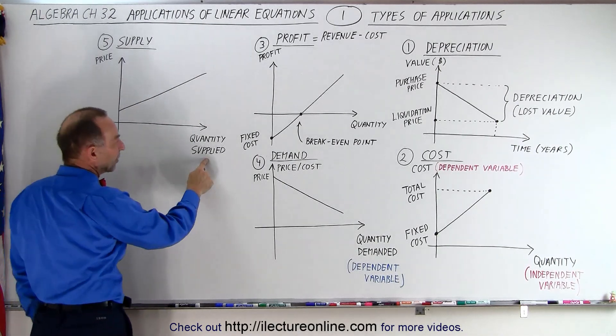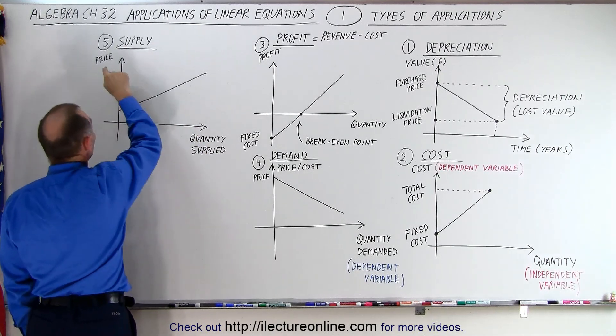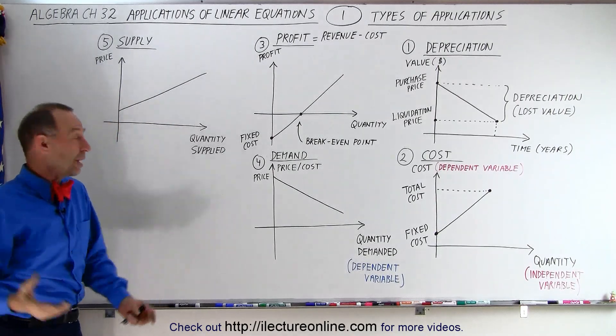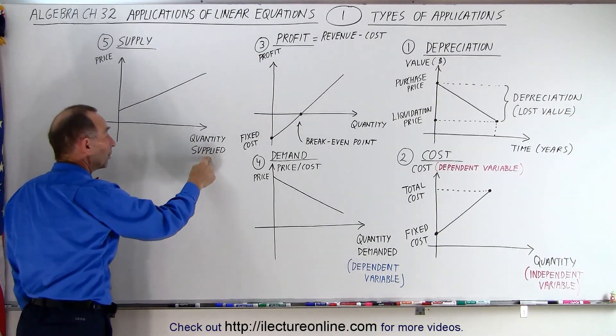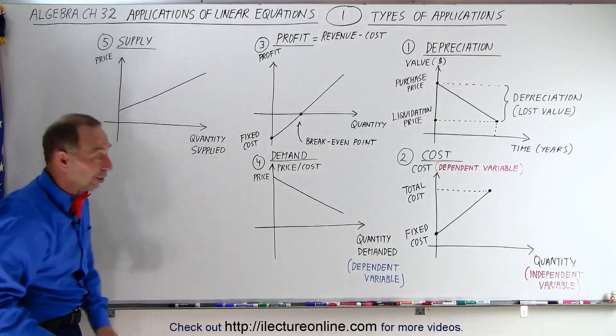So again, let's think of this as the dependent variable and this as the independent variable. If the price is really low, nobody wants to produce it because they can't make a profit. So the quantity supplied by the producers will be very low. Matter of fact, it might even be zero if the price is really low.